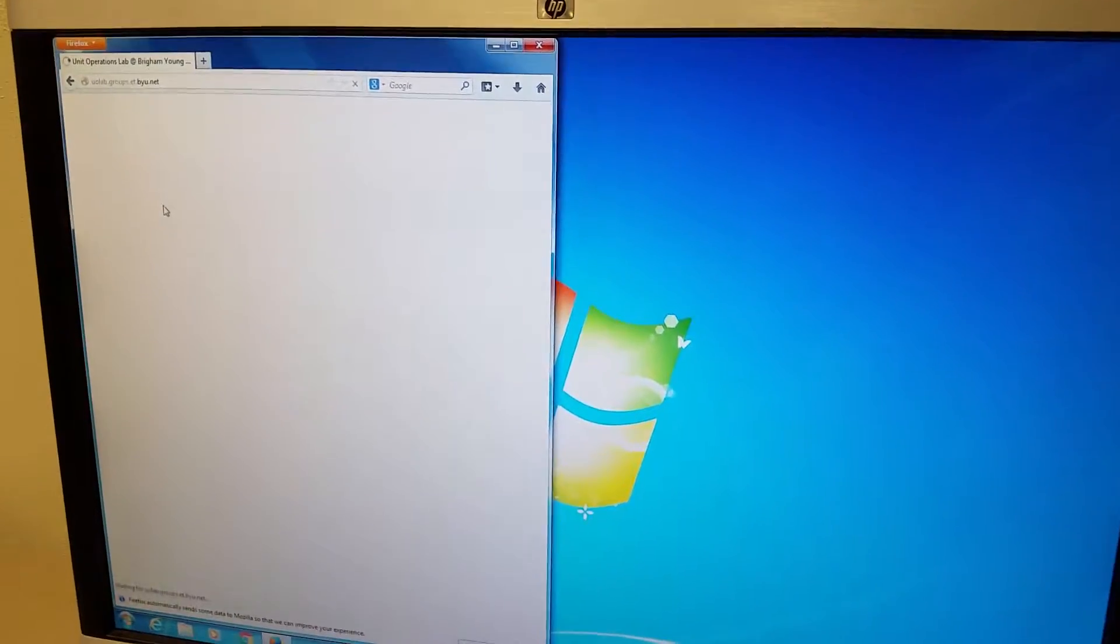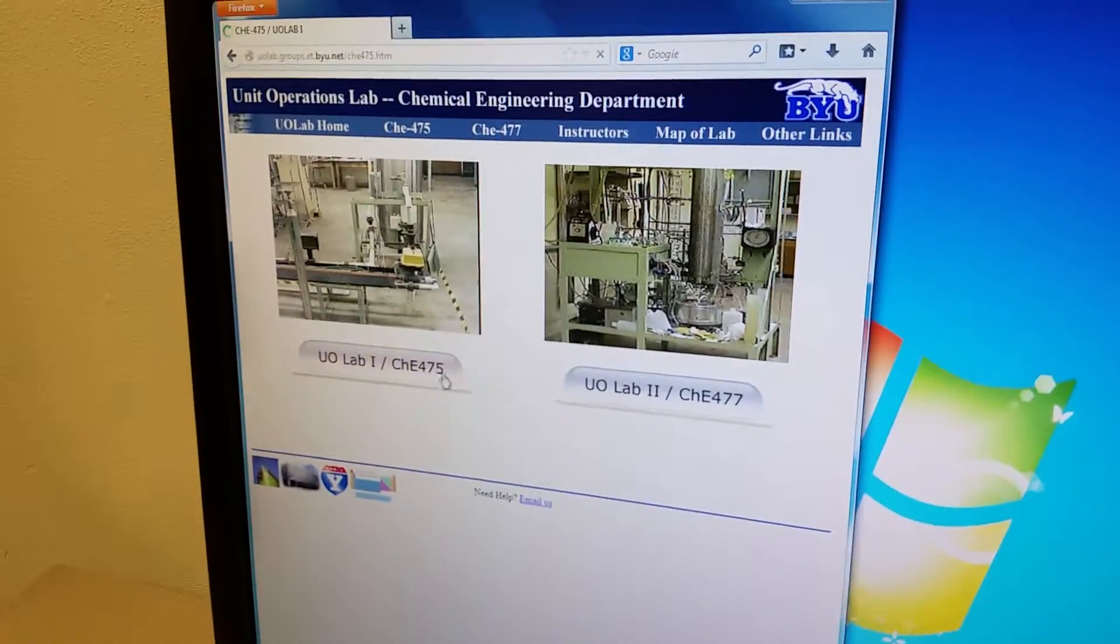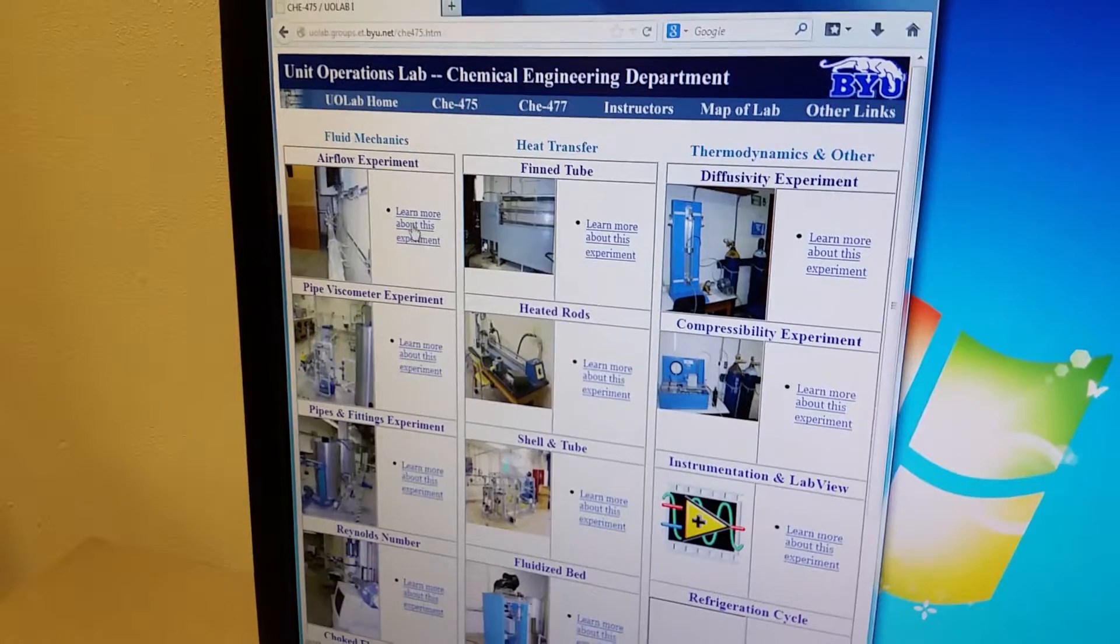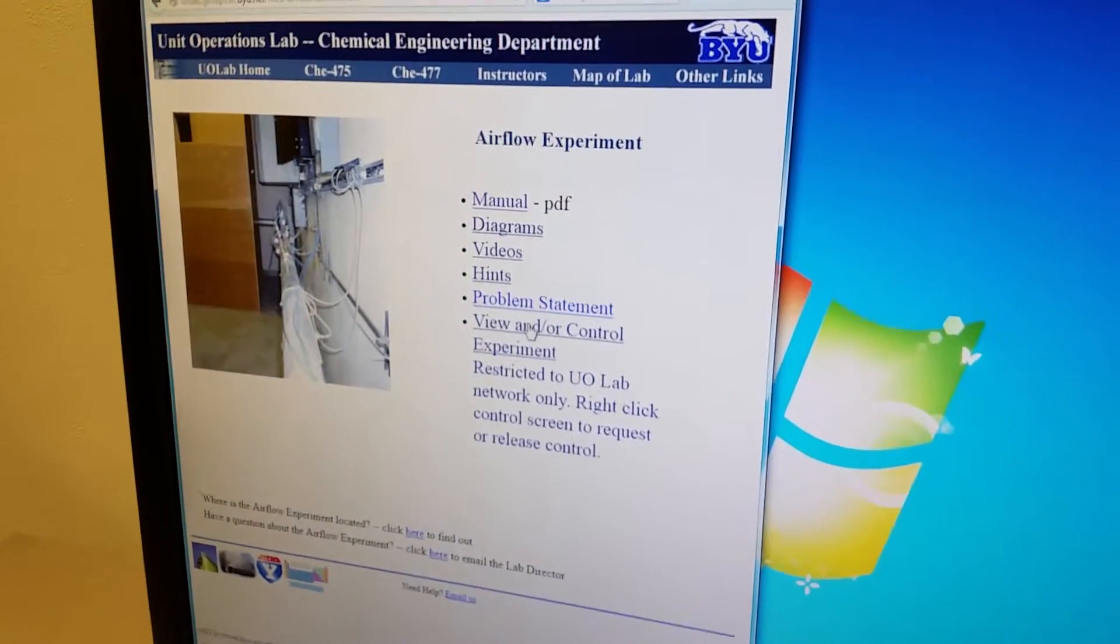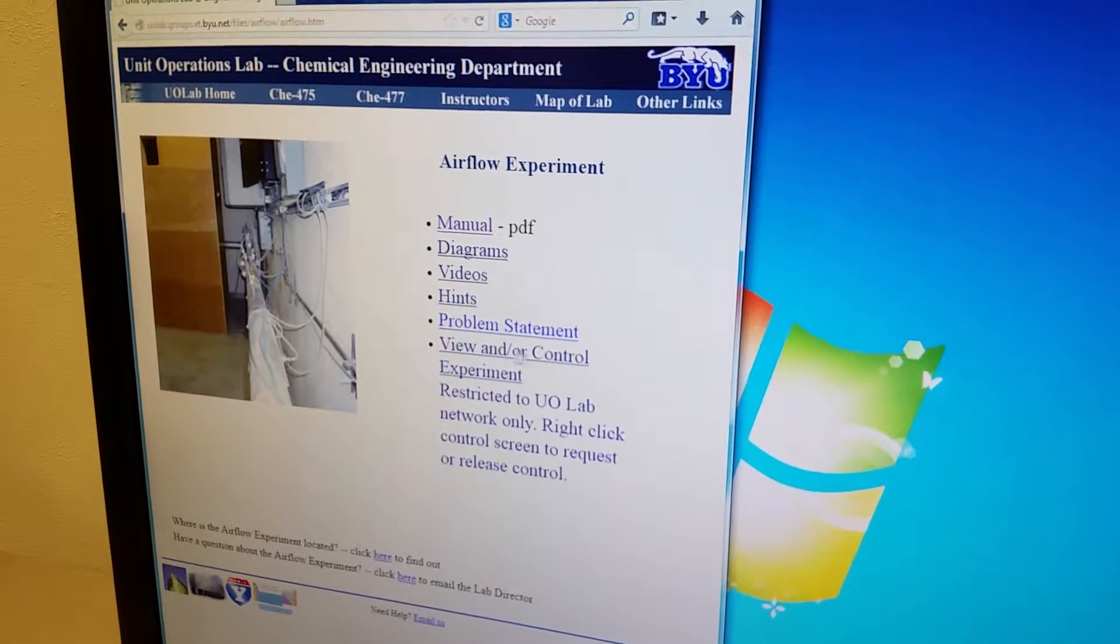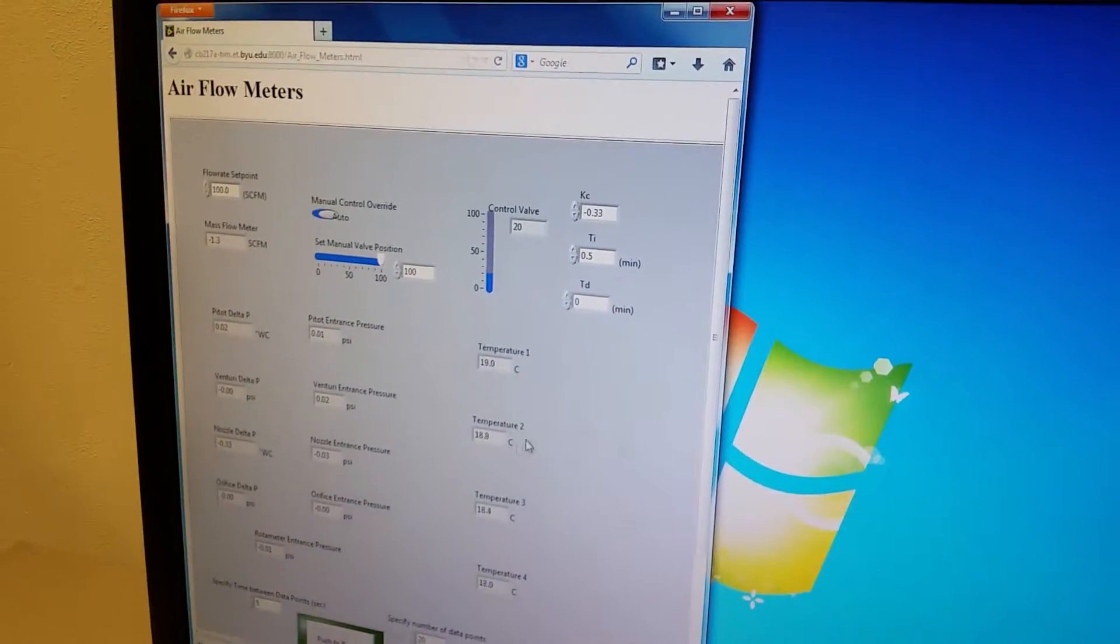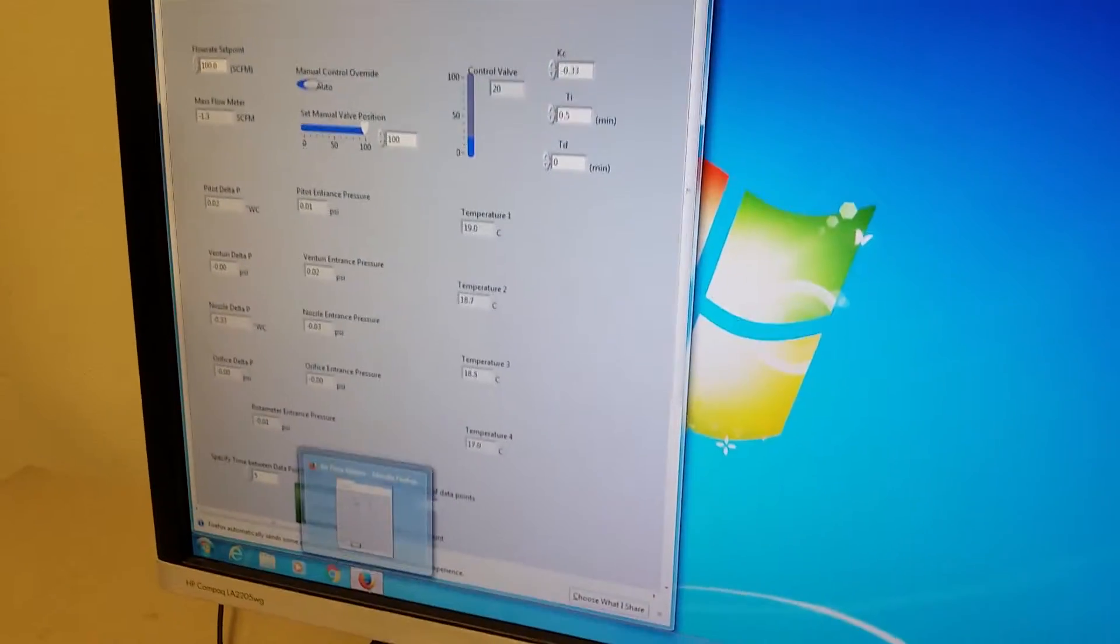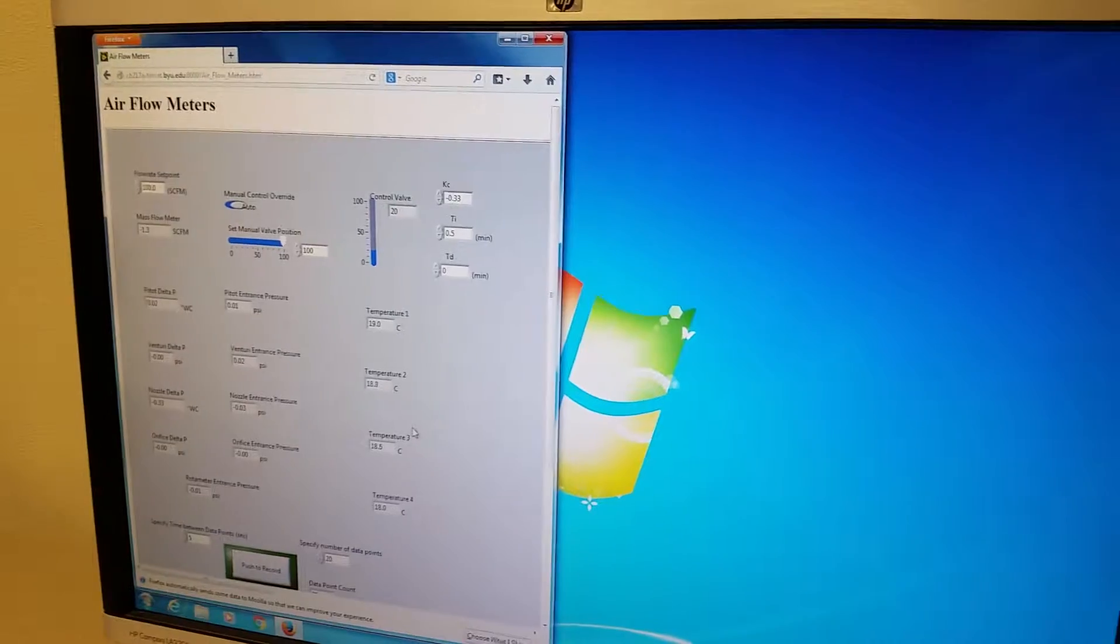the BYU UOLab. Definitely Google. Click on the first link that you find. At this point you're going to be in Chemical Engineering 475, so make sure you click that. And in the upper left hand corner right here, Airflow Experiment. Now, the first thing that you're going to do is before you can start the experiment, you need to view and control the experiment itself. It's going to give you this GUI. So remember to use Firefox or Internet Explorer because it does not function on Google Chrome currently.